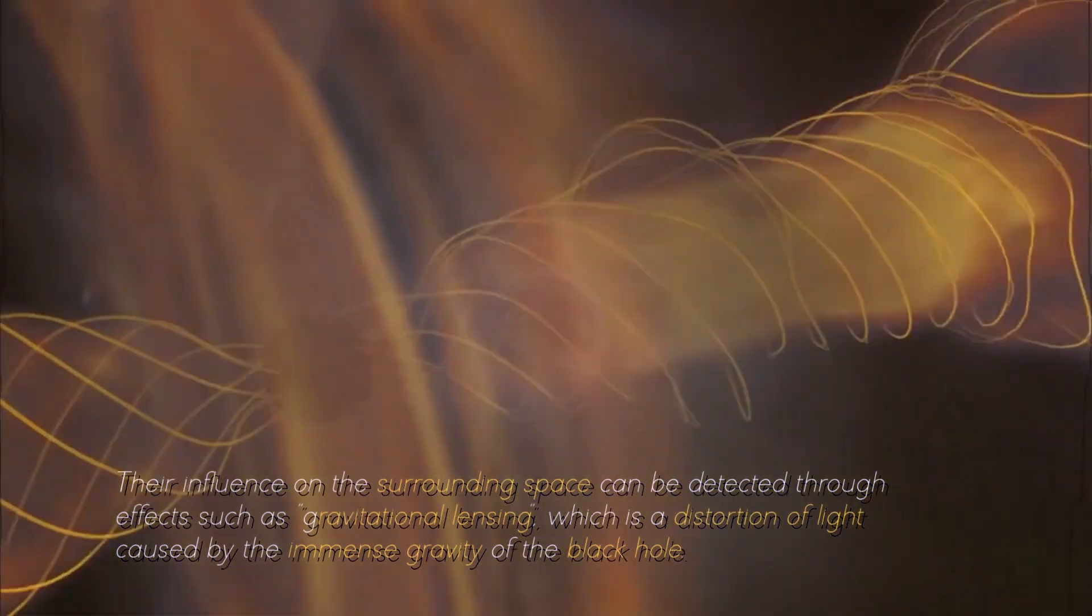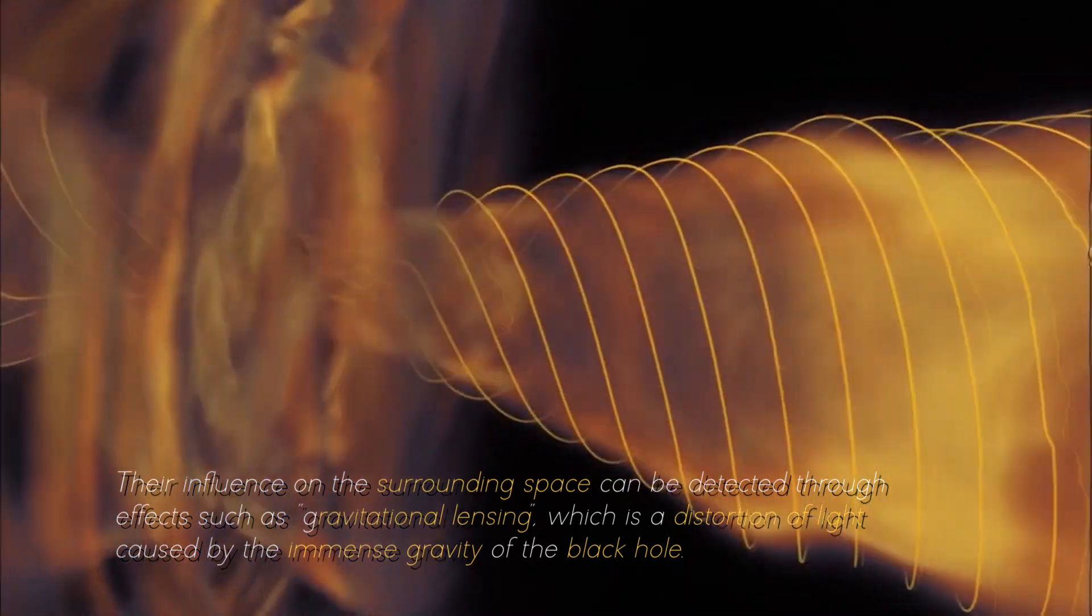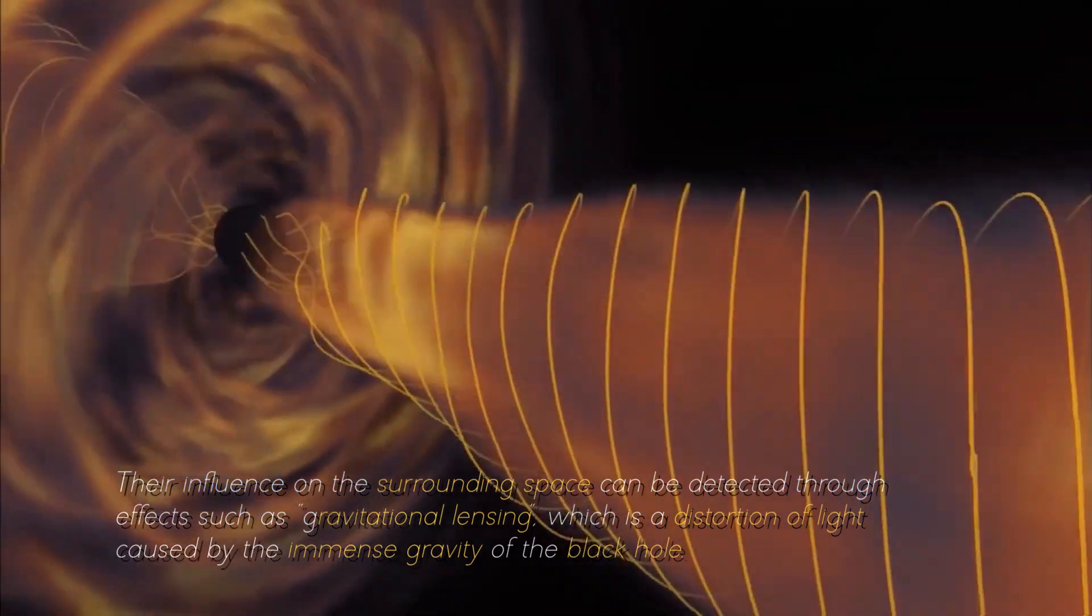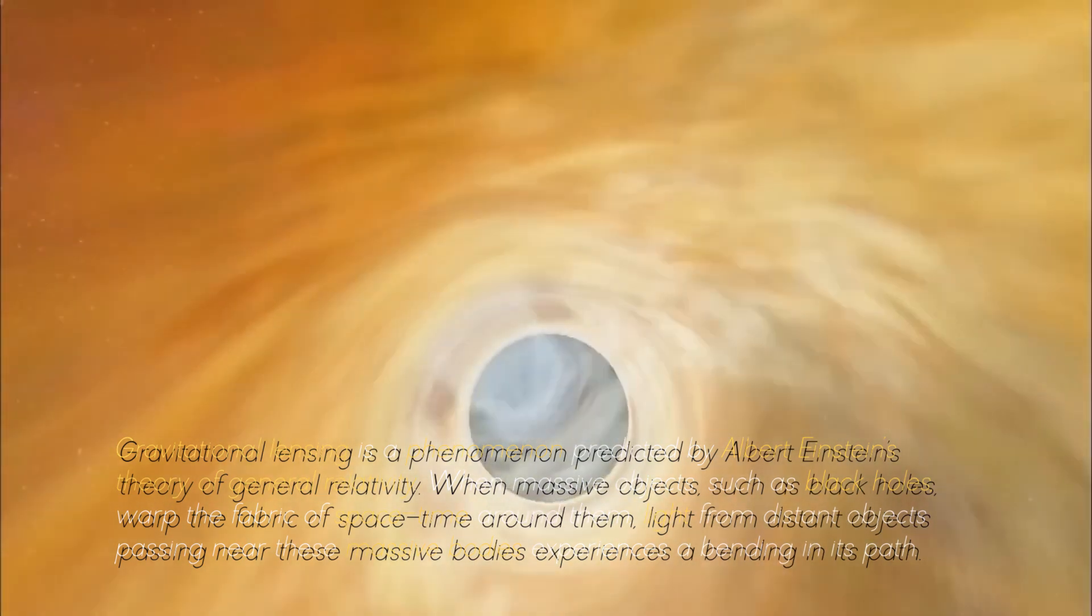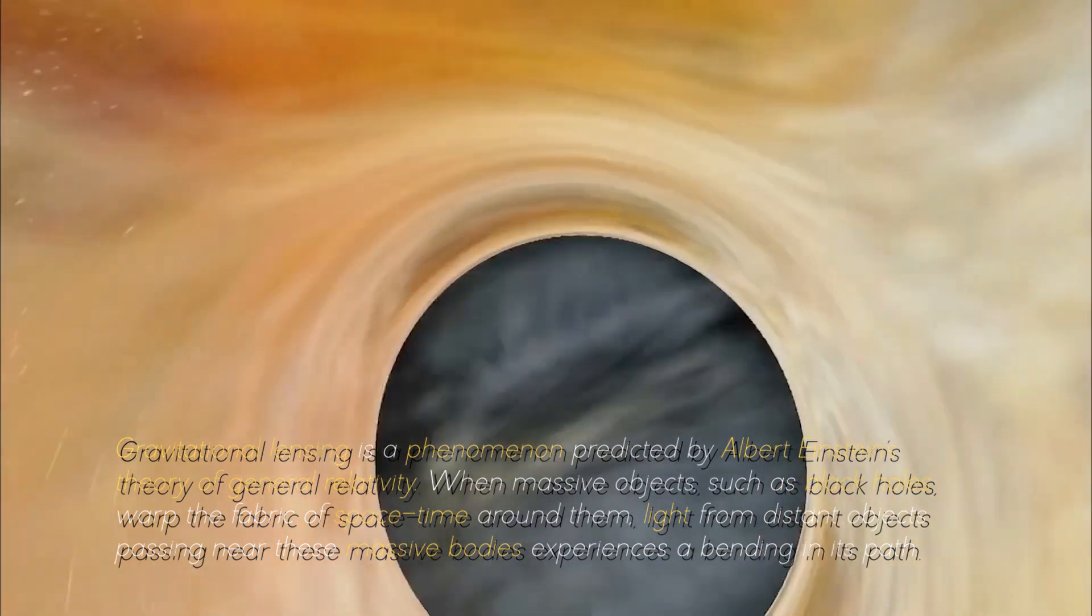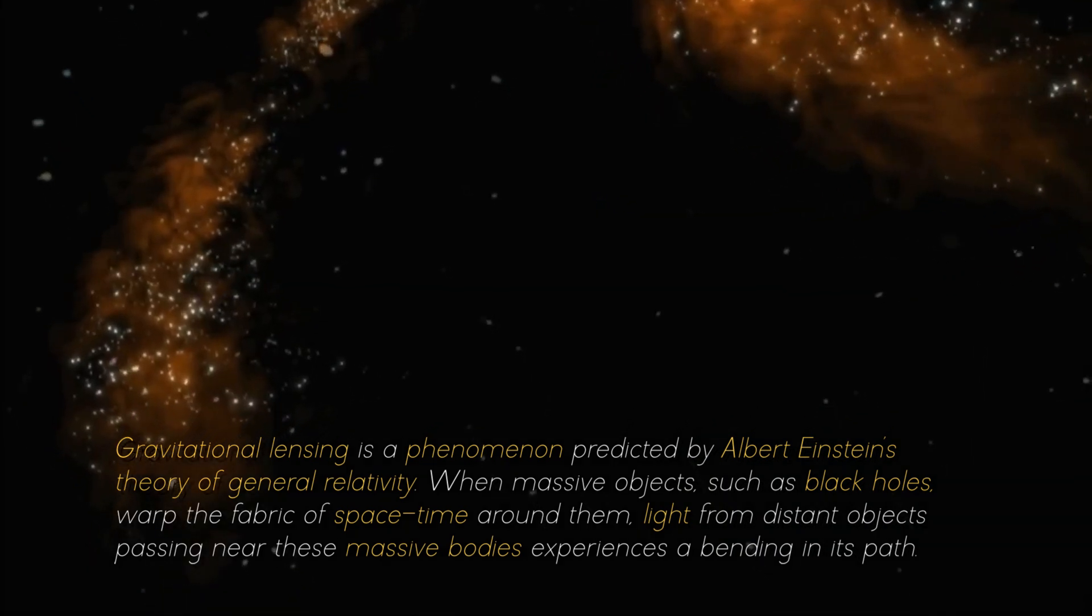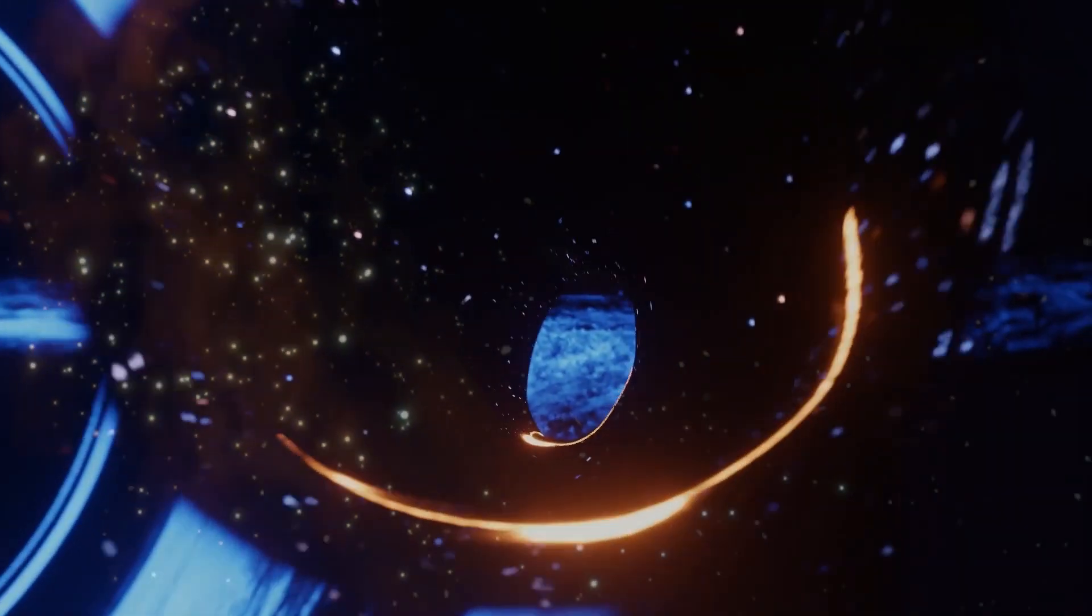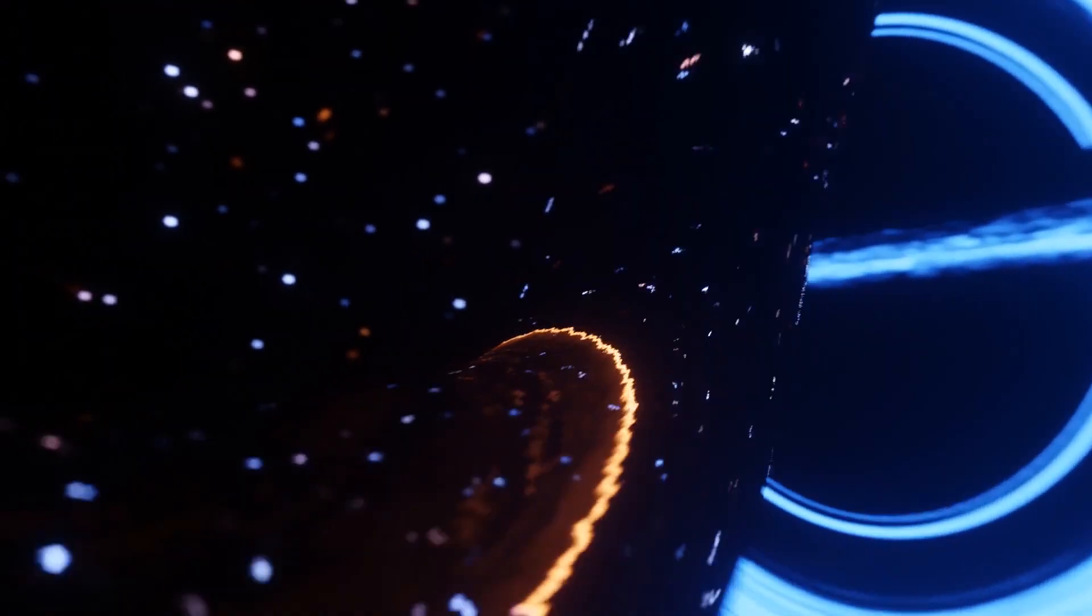Their influence on the surrounding space can be detected through effects such as gravitational lensing, which is a distortion of light caused by the immense gravity of the black hole. Gravitational lensing is a phenomenon predicted by Albert Einstein's theory of general relativity. When massive objects, such as black holes, warp the fabric of space-time around them, light from distant objects passing near these massive bodies experiences a bending in its path.